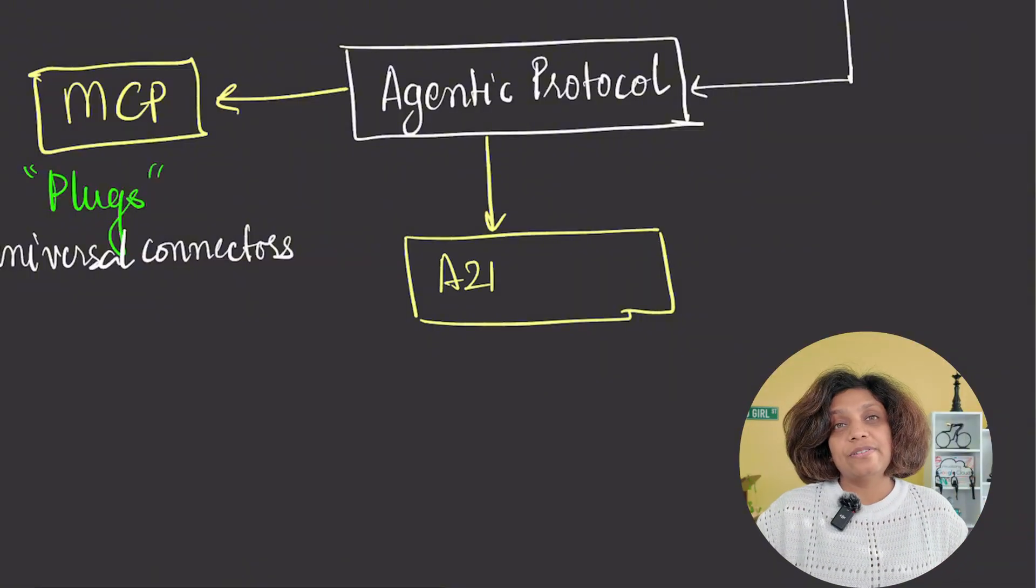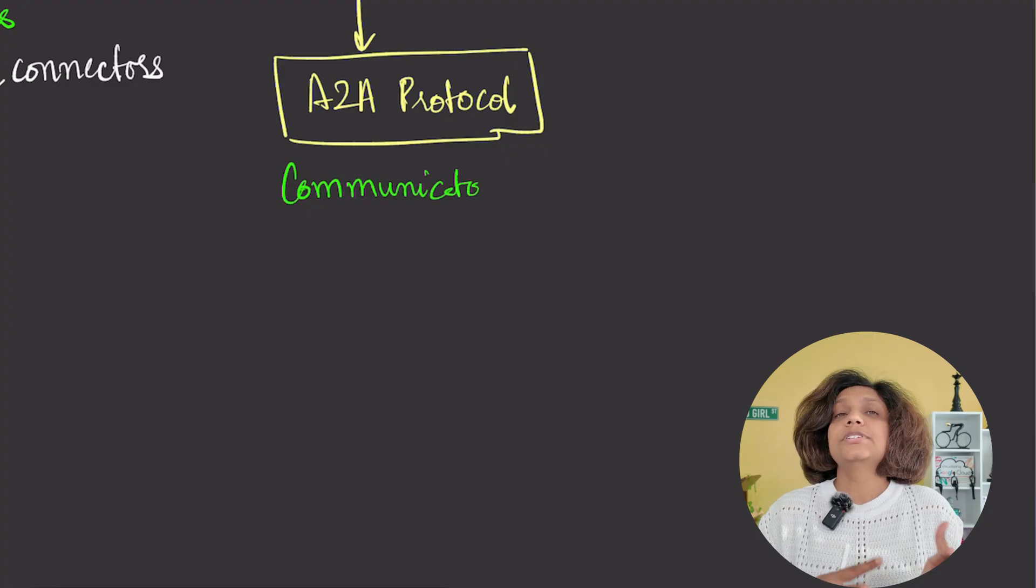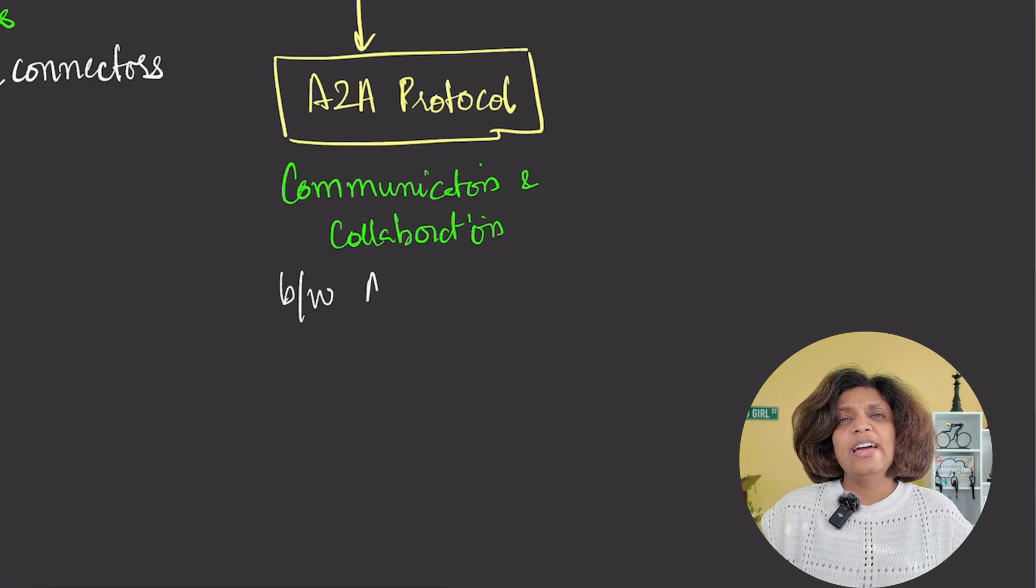Second is the A to A or agent to agent protocol from Google. This enables communication and collaboration between different AI agents. Here's where it gets powerful. Going back to our Slack example, after fetching those Asana updates using MCP, the Slack agent identifies a critical bug that needs a detailed report. Instead of doing it itself, the agent uses A to A to securely communicate with a separate, specialized reporting agent that might live in a completely different server. This reporting agent generates the detailed bug report and sends it back. All of this happens autonomously with agents working together like a team.